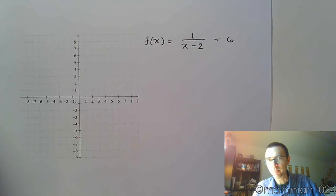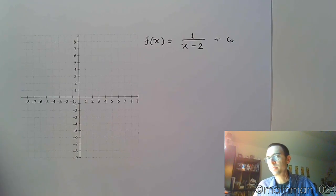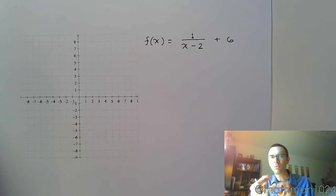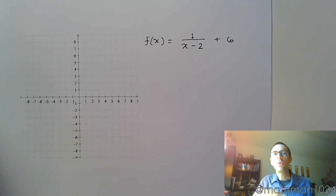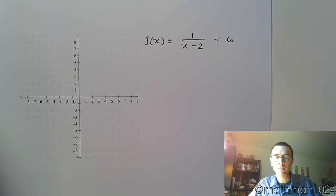For this example, we identify that this is a function that has a fraction. So we have a rational function, which means we're going to be dealing with asymptotes, we're going to be dealing with weird domains and ranges, and we also want to answer the questions about where is this increasing and where is it decreasing.